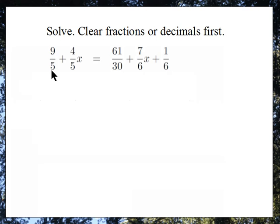I want to multiply by the smallest number for which all of my denominators are a factor, so it's going to be the least common multiple of these denominators. I want to know a number that 5 divides into, that 30 divides into, and that 6 divides into. The smallest number that all of those numbers divide into is going to be 30. So what I'll do is multiply both sides — every single term: this term, this term, this term, this term, and this term — each term will be multiplied by 30.